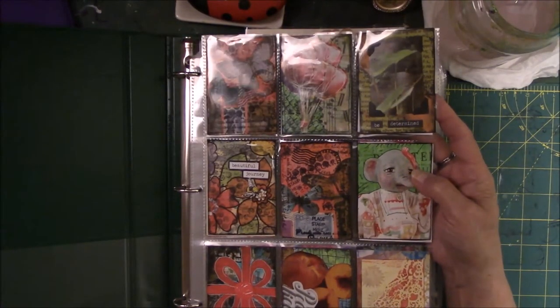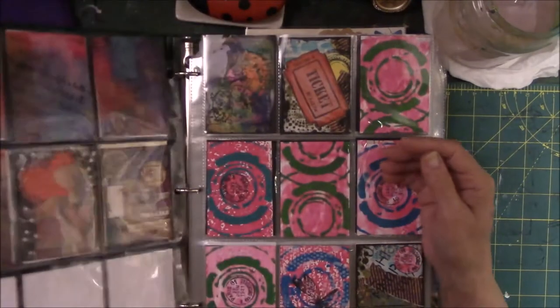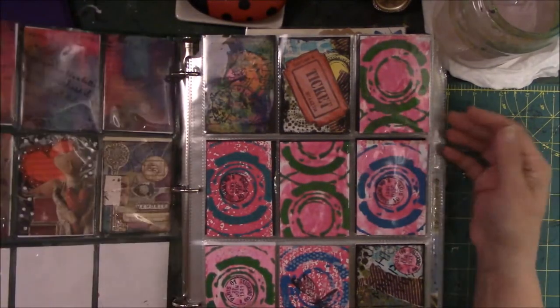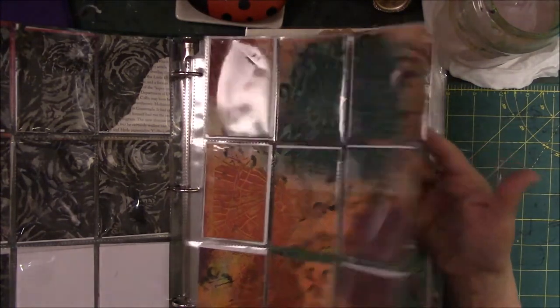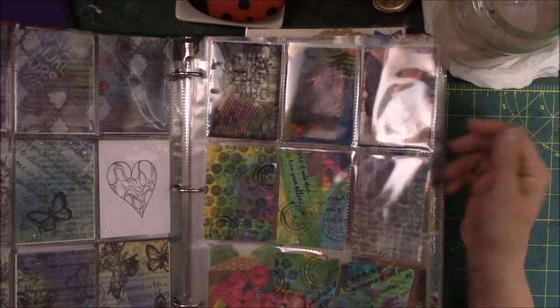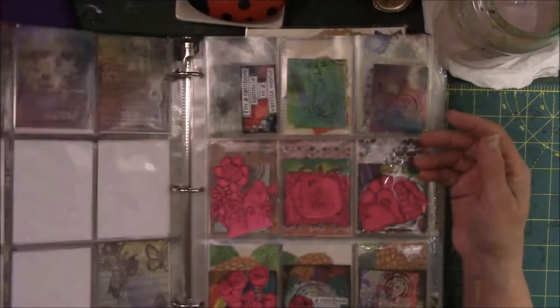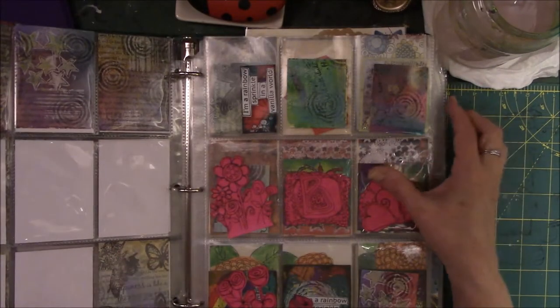I got them off of Amazon. It's got three, six, nine places and you can do 18 because you can do back to back. So these are how I store ATCs that I make that are waiting to go somewhere. And I find it's much easier to do it this way than any other way that I've found.